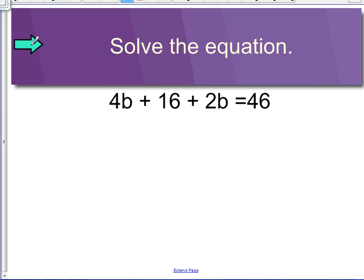Here's another one. We want to combine the like terms again. In this one we have 4b plus 16 plus 2b. So our first step is to combine our like terms, which in this case was 4b and 2b. So that's where we got 6b plus 16 equals 46.